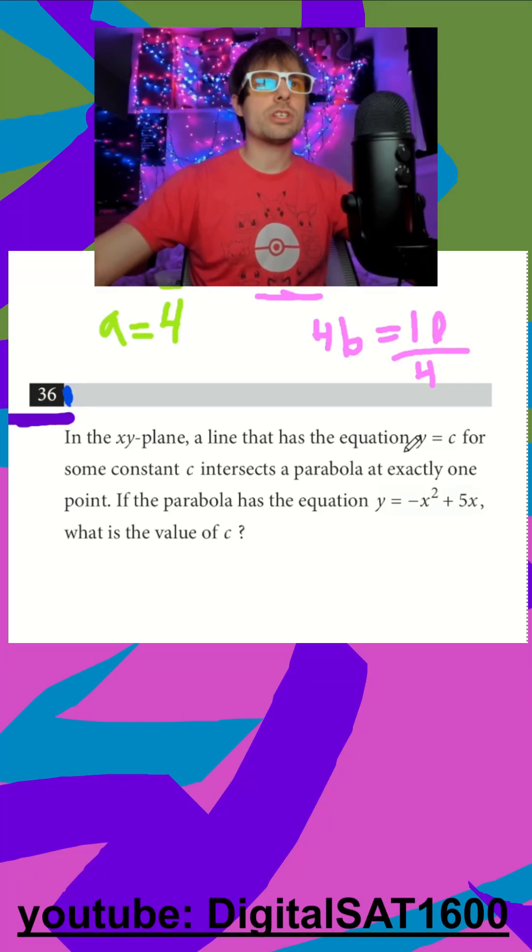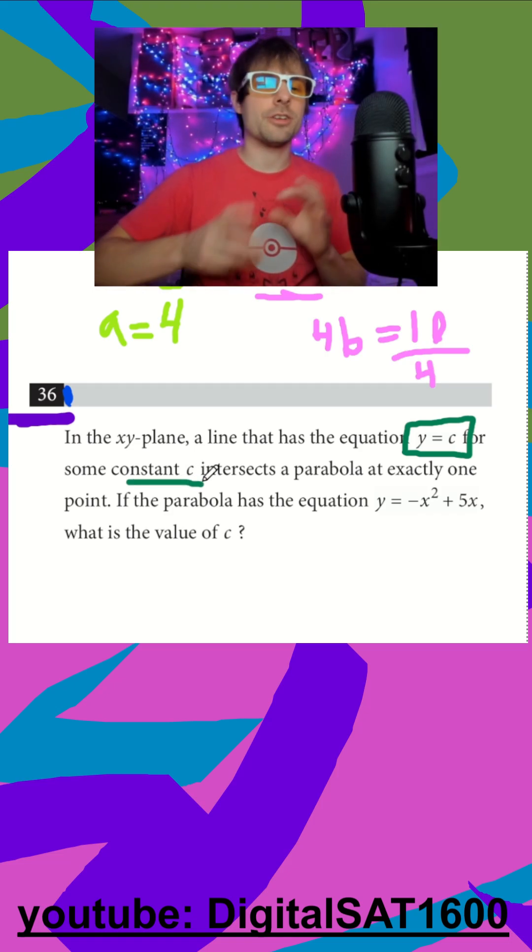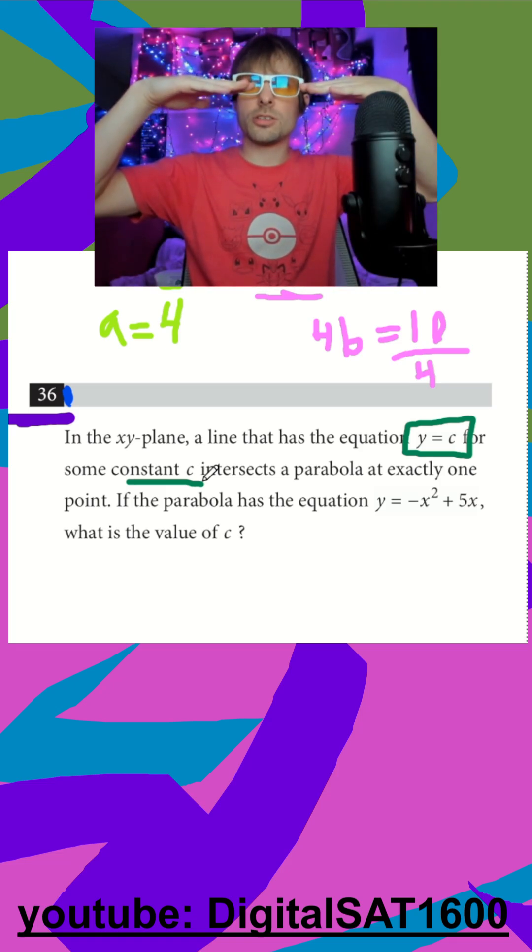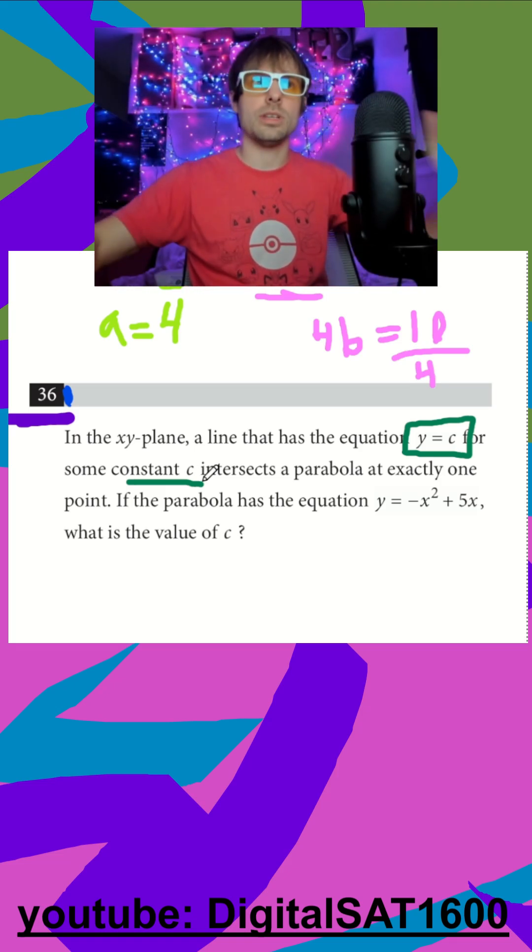I see that we have an equation y equals c. What's cool is they tell us c is some constant. If you ever forget what your x equals or your y equals lines look like, just jump in Desmos, do like y equals five, right? Your y equals are going to be horizontal lines, your x equals are going to be vertical lines.